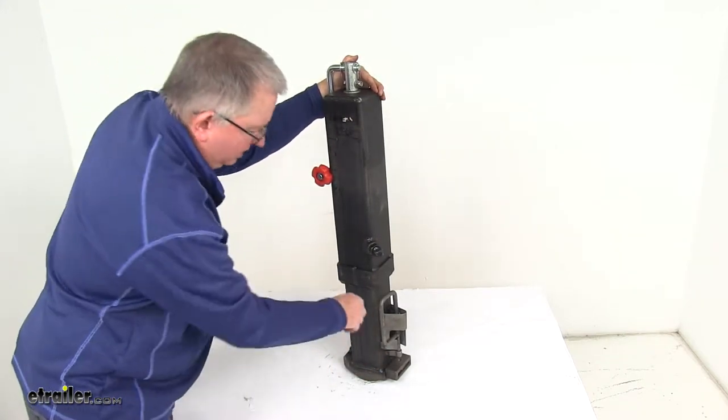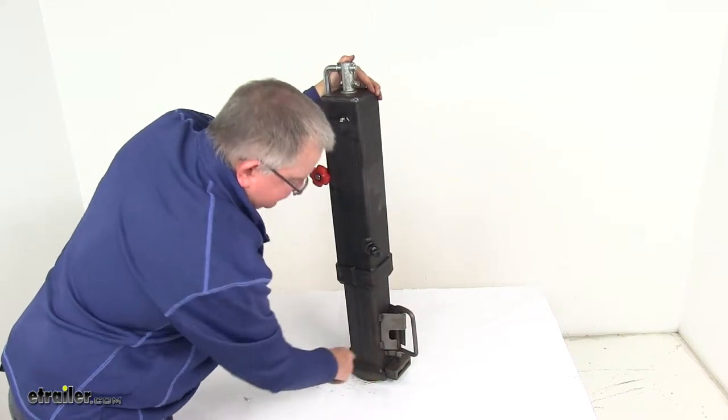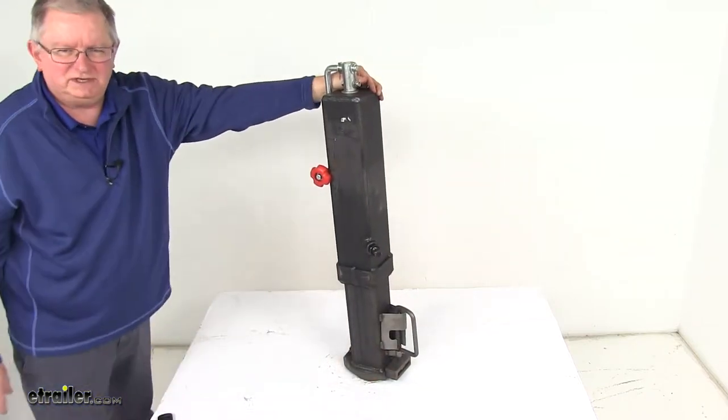You drop it over the gooseneck ball. Once it gets over the ball, you just release it. It's spring-loaded, locks into place and keeps that clamp over the gooseneck ball.